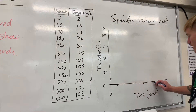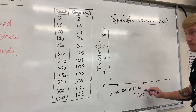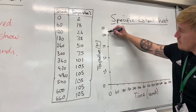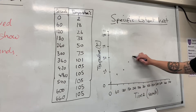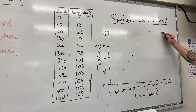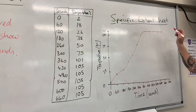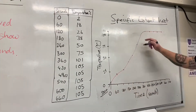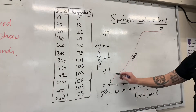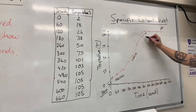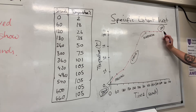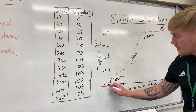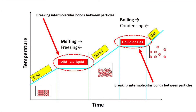As the temperature rises, we can see it stops going up and plateaus at a point where the energy is breaking down those intermolecular bonds. That takes time, and during that time the temperature stays the same while the change of state occurs — from liquid to gas.